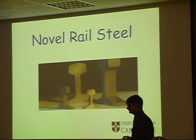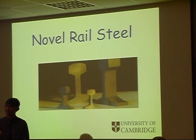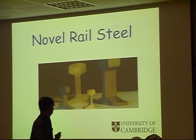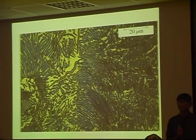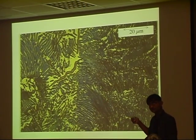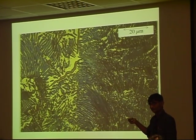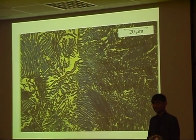Here is an example of a material which is completely different from normal steel that is used for rails and produced only by theory. So there is no experiment involved in the design of this steel. Now, a normal rail steel has this kind of a structure. Do you know what this is? Pearlite. Layers of cementite and layers of ferrite, alternating plates.